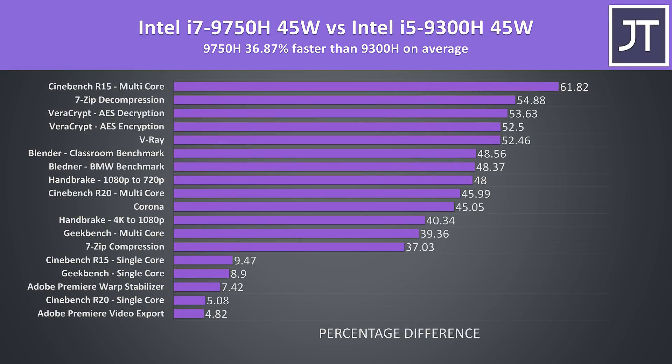Here's a summary of all of the applications just tested. On average over these tests, the Intel i7-9750H was 37% faster than the i5-9300H, though that overall percentage includes both single and multicore tests. Some of the rendering tests were around 50% better with the extra cores, then single core performance was anywhere from 5 to almost 10% faster with the i7, about what you'd expect given the i7 has 50% more cores and the single core turbo boost speed is almost 10% faster.